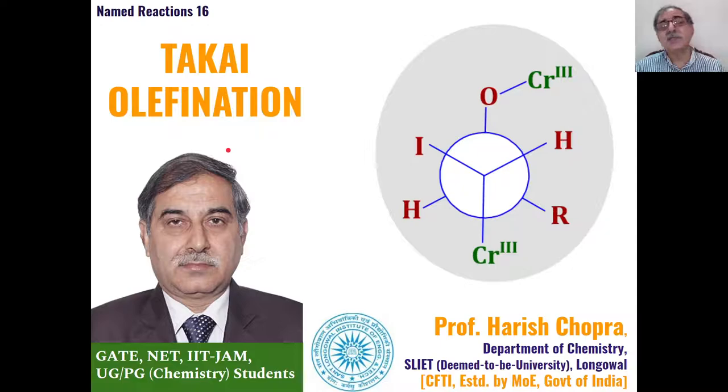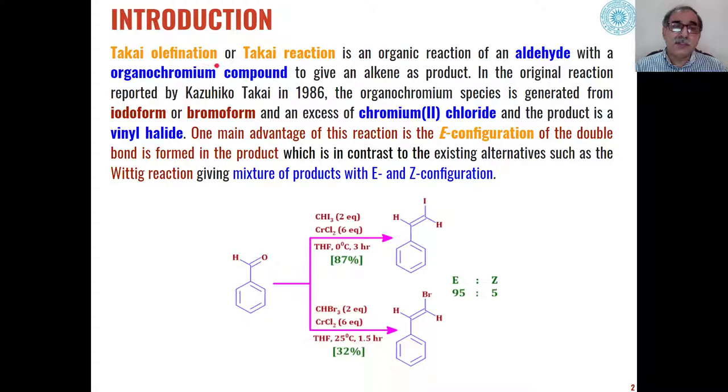Basically, this is a reaction for formation of a new carbon-carbon bond. The Takai olefination or Takai reaction is the reaction of aldehydes with organochromium compounds like chromium chloride in presence of iodoform or bromoform to give us alkenes as the product. Basically the product formed is a vinyl halide from the reaction of aldehydes with chloroform, iodoform, or bromoform.